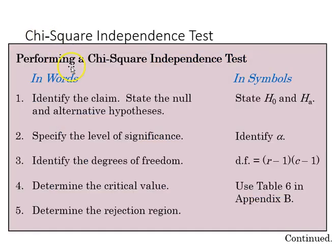These are our steps. We first identify the claims and state them as hypotheses, our null and alternative. We identify a level of significance, our alpha, our degrees of freedom, r minus 1 times c minus 1, the critical value we get from our chi-square table based on the above criteria, and this will give us the rejection region.